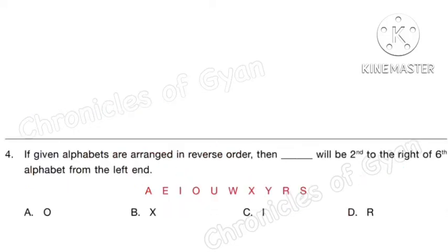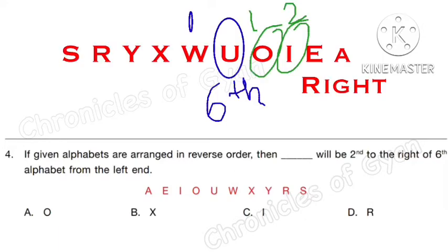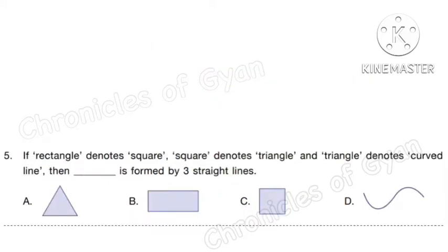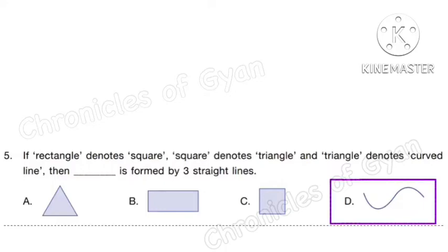Question 4. If the given alphabets are arranged in reverse order, then the blank will be second to the right of the 6th alphabet from the left end. Correct answer is option C, that is I. Question 5. If rectangle denotes square, square denotes triangle, and triangle denotes curved line, then the blank is formed by 3 straight lines. Triangle is formed by 3 lines, but here triangle denotes curved line. So the correct answer is option D: curve.